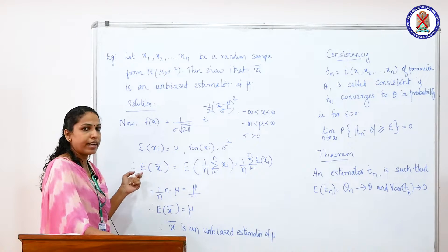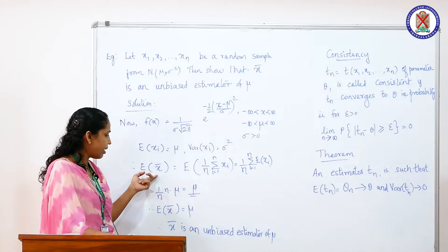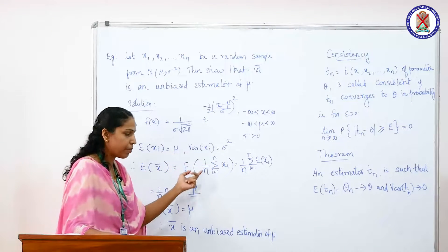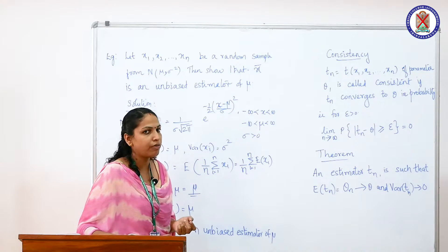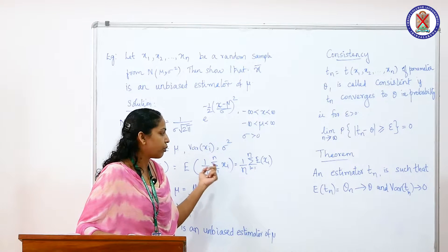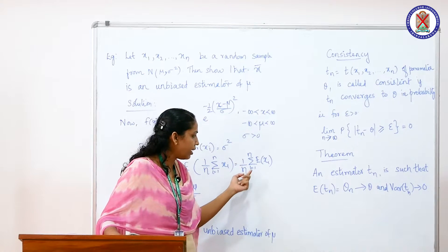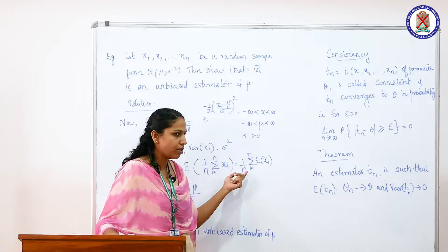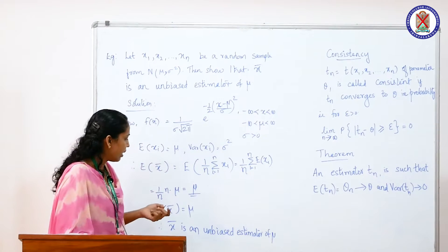Consider the expectation of the sample mean x bar. We expand it as expectation of (1/n) * summation from i=1 to n of xi. By the property of expectation, we can write this as (1/n) * summation from i=1 to n of expectation of xi. We take the summation outside because the random samples are always independent.